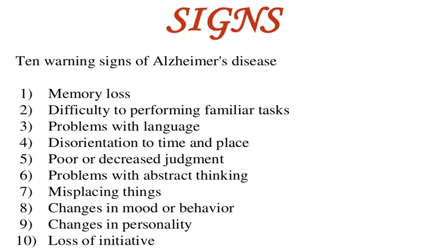The 10 warning signs of Alzheimer's disease to look for in a patient are: first, progressive memory loss; second, difficulty performing familiar tasks that the patient had previously done; third, problems with language or mother tongue; fourth, disorientation with time and place; fifth, poor or decreased judgement; sixth, problems with abstract thinking; seventh, misplacing things; eighth, changes in mood or behaviour; ninth, changes in personality; and tenth, loss of initiative. These are the 10 warning signs of Alzheimer's disease.